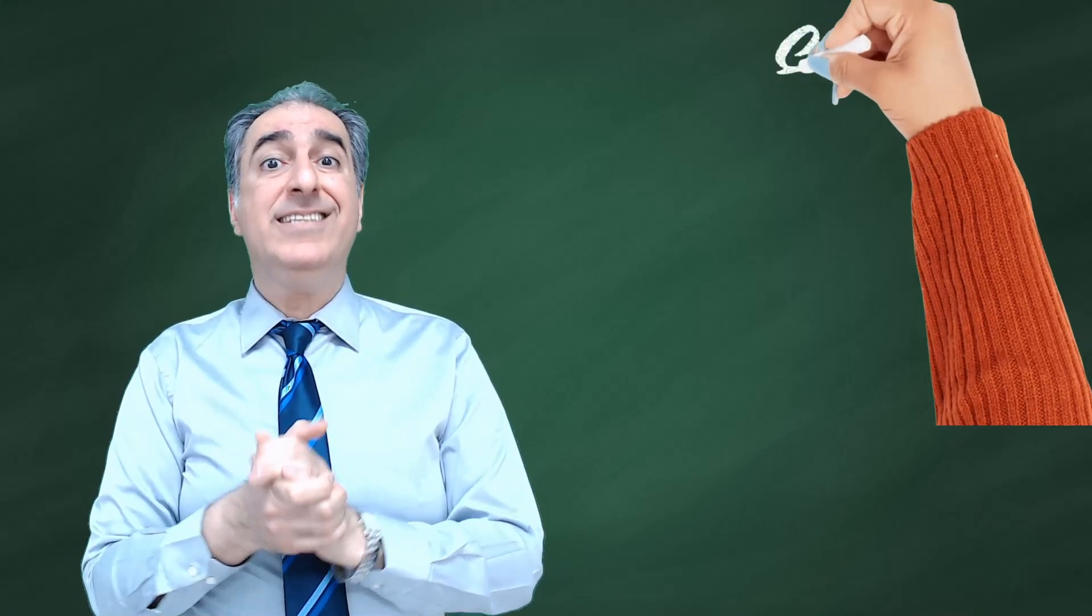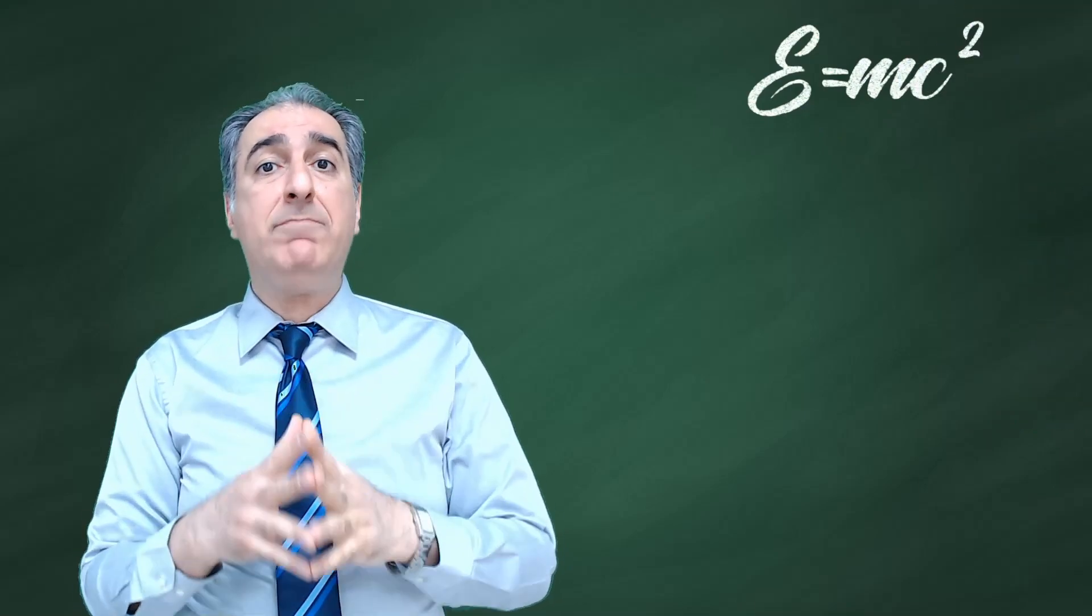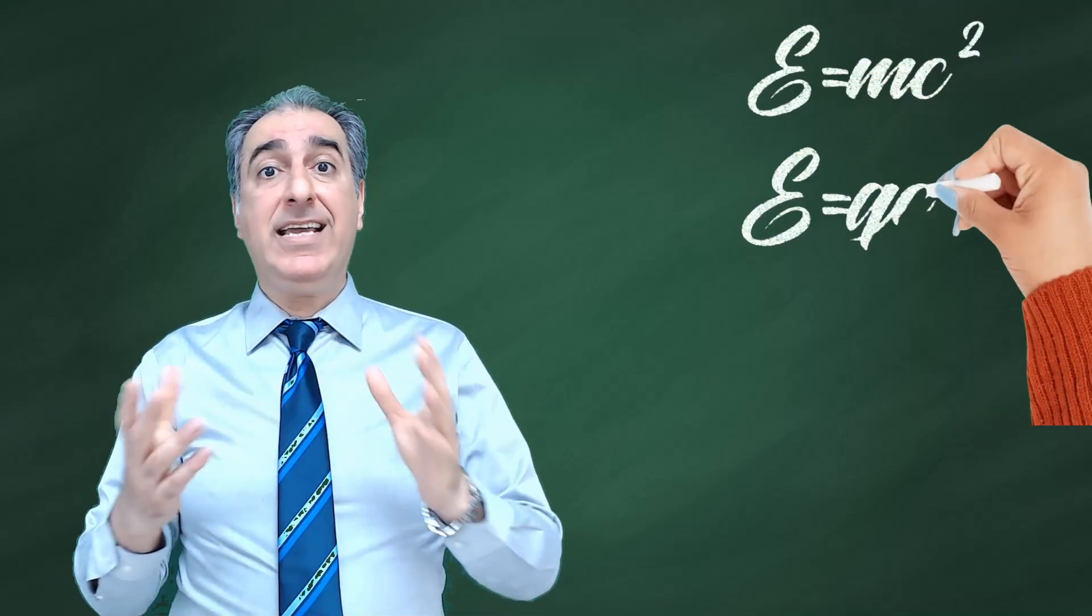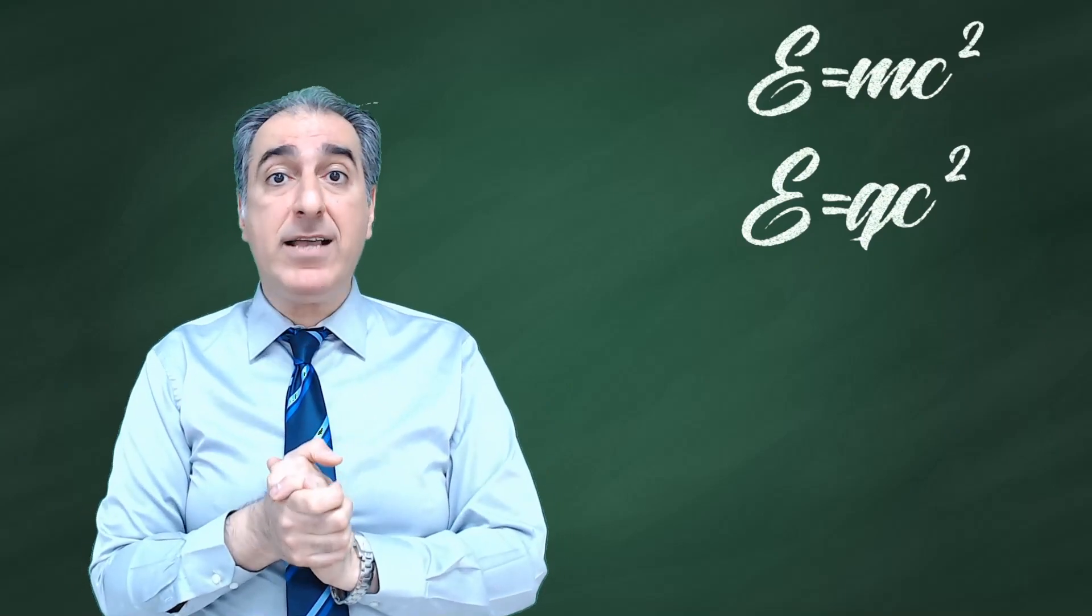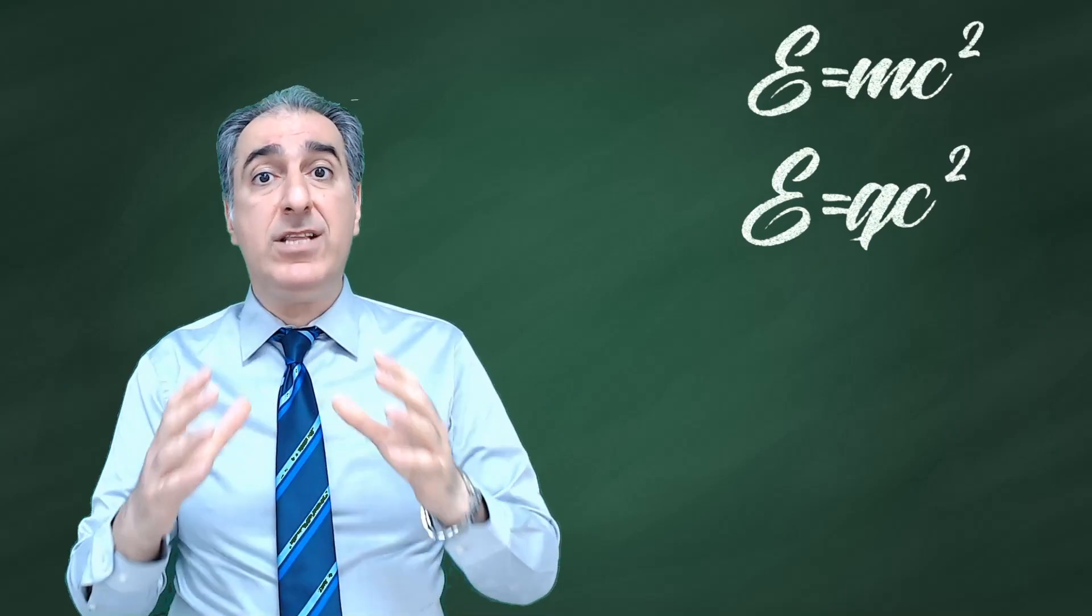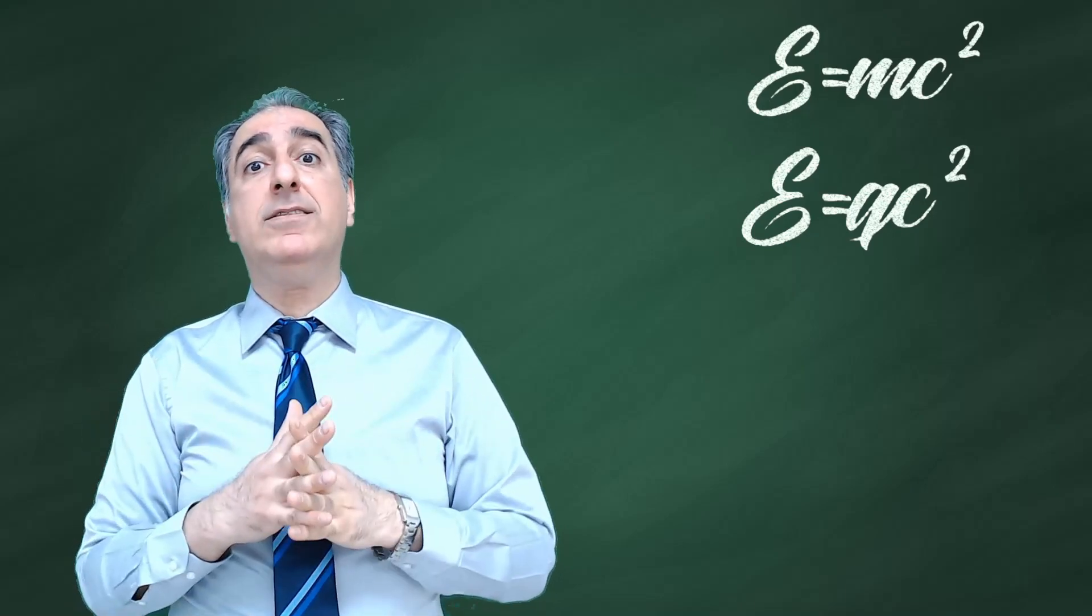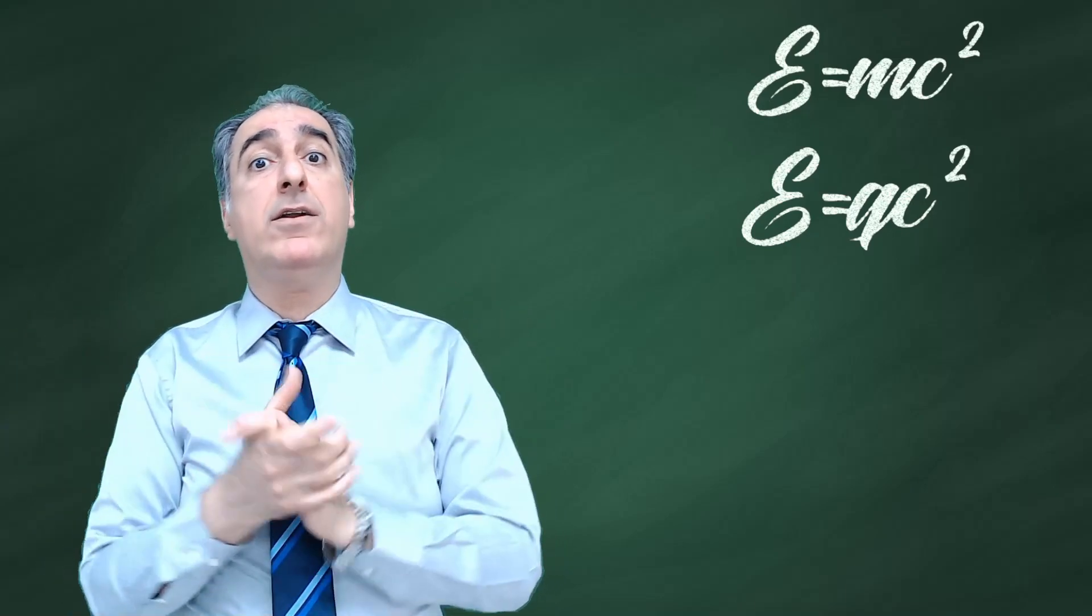You may want to start your thinking journey from an equation similar to E equals MC squared, something like E equals QC squared. You'll immediately find out that this equation could not be correct, just because the units on both sides are not the same.